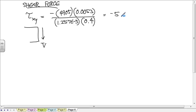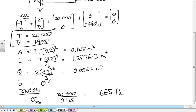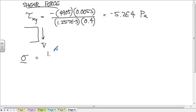So negative 5.2 times 10 to the 4th, and so now we can put that together, and the total stress tensor is equal to 1.6 times 10 to the 5th, negative 5.2 times 10 to the 4th, negative 5.2 times 10 to the 4th, and everything else 0s.